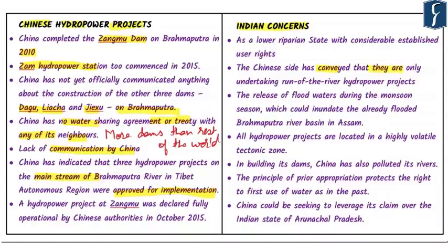India's concern is that these dams are large enough to be converted and used as storage dams. China could deprive India of water during the lean season, giving China leverage to arm-twist India. Another concern is that when China releases water during monsoon season it can inundate the already flooded Brahmaputra river basin in Assam. There is also apprehension that the Brahmaputra may lose silt that makes the plains in its basin fertile, because sediments get trapped in the dams.